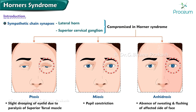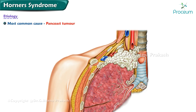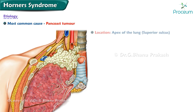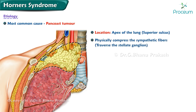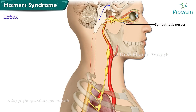The most common cause of Horner syndrome is a Pancoast tumor. A Pancoast tumor is typically located at the apex of the lung, often at the superior sulcus, and can physically compress the sympathetic fibers as they traverse the stellate ganglion. Shoulder pain on the affected side is also a common presenting symptom of a Pancoast tumor due to compression of the brachial plexus.